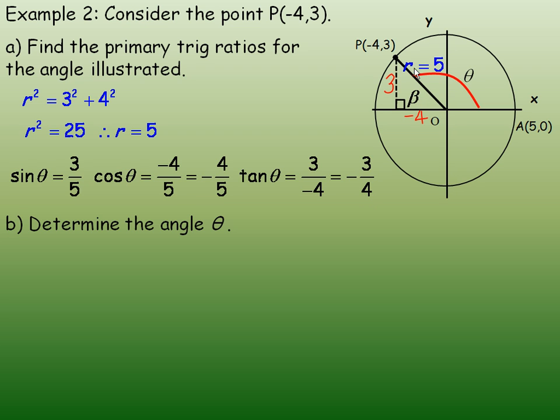So notice that the tan is also negative because the opposite side would always be positive, but the adjacent side would always be negative in the second quadrant. So in the second quadrant, sine is positive, but cosine and tan are both negative.